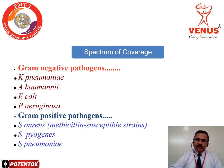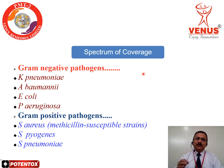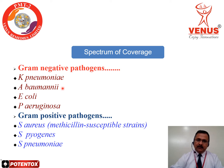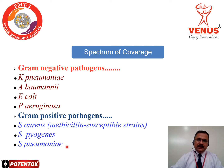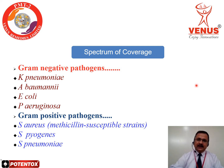Potent Talks is a broad-spectrum antibiotic. Here are the key bacteria against which Potent Talks has excellent efficacy. For gram-negative bacteria: Klebsiella pneumoniae, Acinetobacter baumannii, E. coli, and Pseudomonas aeruginosa. For gram-positive bacteria: Staphylococcus aureus (methicillin-susceptible strains), Streptococcus pyogenes, and Streptococcus pneumoniae. These are the main seven bacteria against which Potent Talks has excellent efficacy in terms of spectrum of coverage.